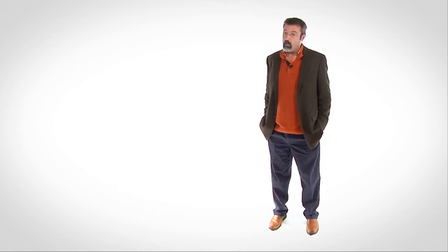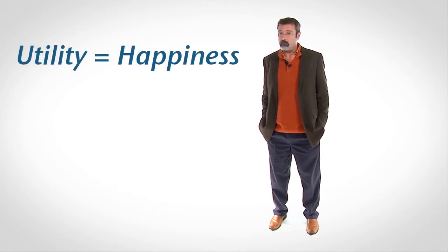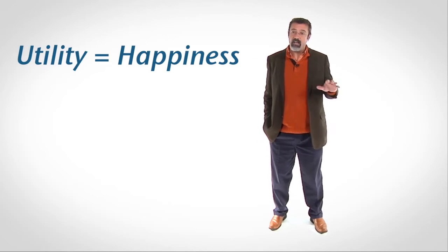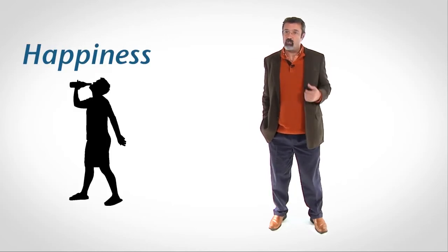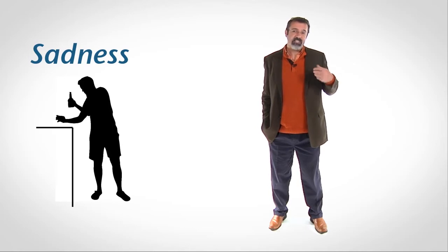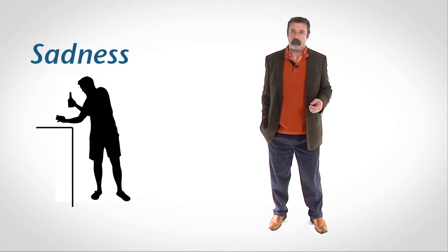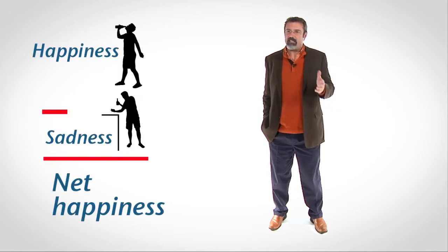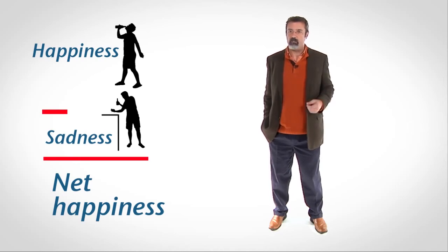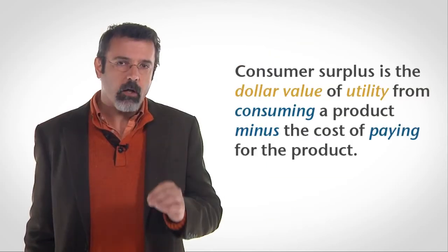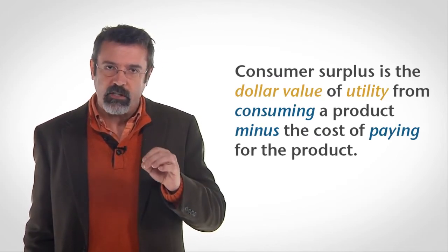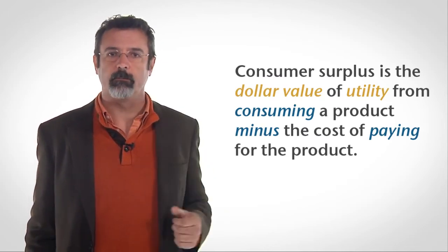Consider the happiness a person obtains from consuming a product. We call the happiness utility. When a person goes out and buys a beer, the person obtains happiness when he consumes the beer and incurs sadness when he pays for the beer. Think about the net happiness the consumer has gained after consuming and paying for the beer. The dollar value of that net happiness to the person is the person's consumer surplus.